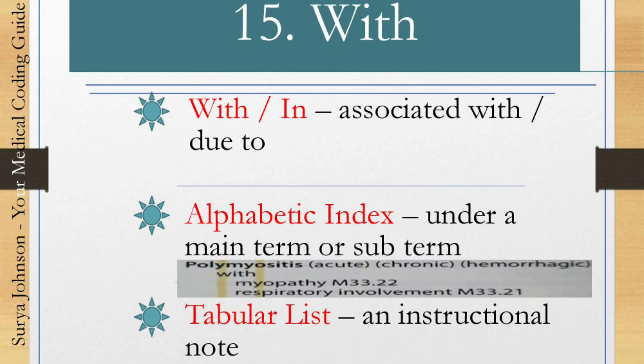Convention 15 is the word 'with.' It can also be confirmed as 'in' — meaning associated with or due to. In the alphabetic index, 'with' appears under a main term or sub-term. For example, under polymyositis, 'with myopathy' leads to a different code, and 'with respiratory involvement' leads to another code. So 'with' means the sub-term below is associated with the main condition. In the tabular list, it is just an instructional note.